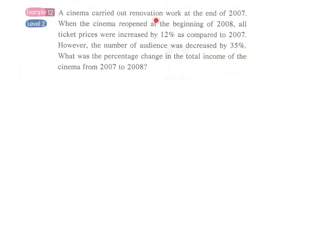Example 12: A cinema carried out renovation work at the end of 2007. When it reopened in 2008, all ticket prices increased by 12 percent and the number of audience dropped by 35 percent. What is the percentage change in the total income of the cinema from 2007 to 2008?